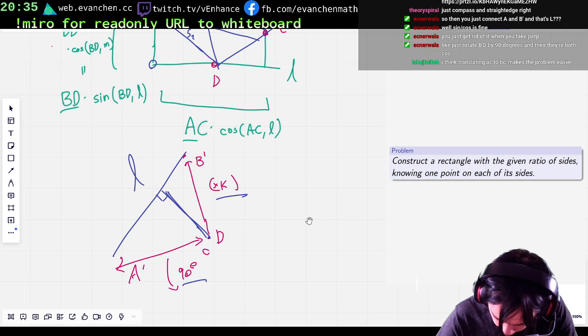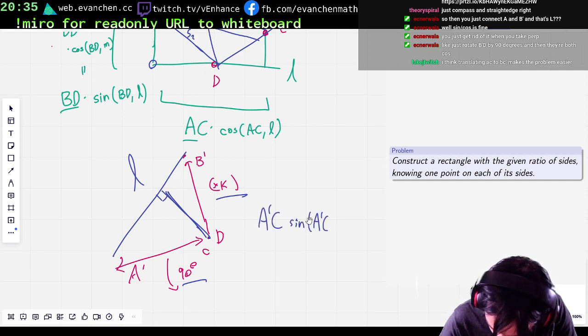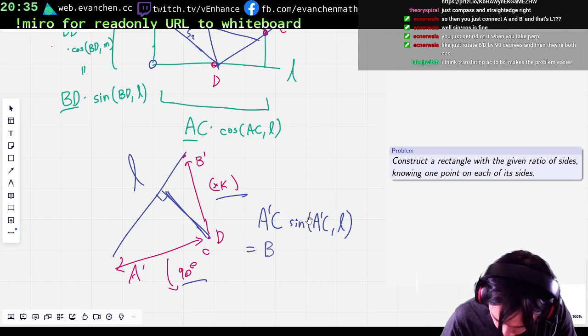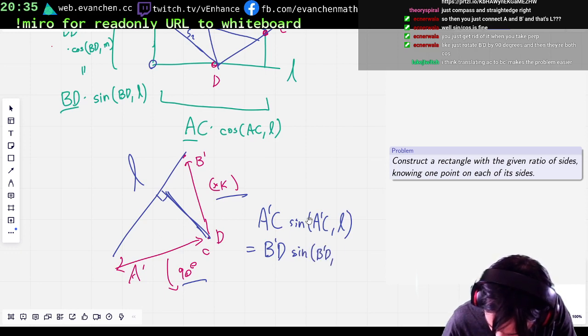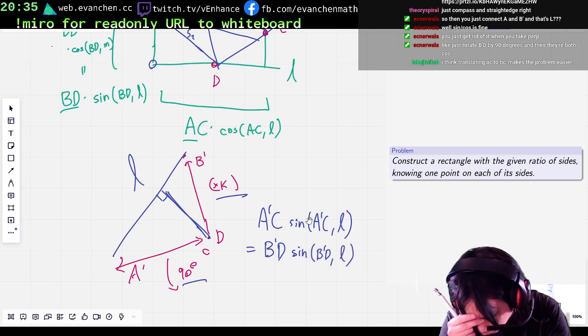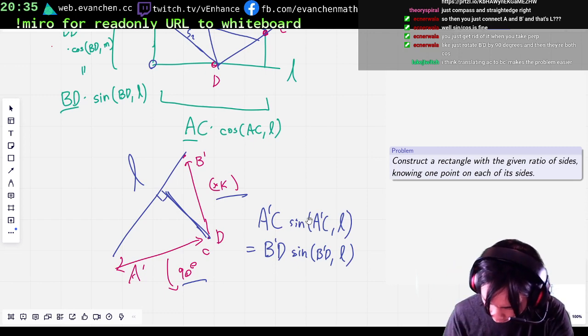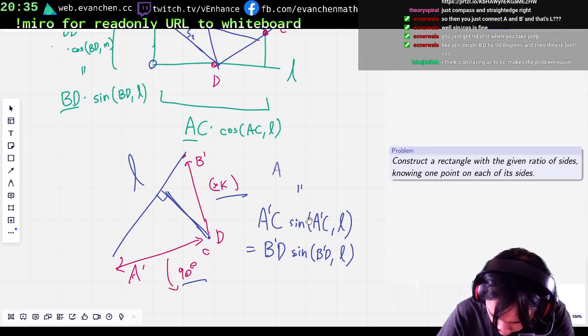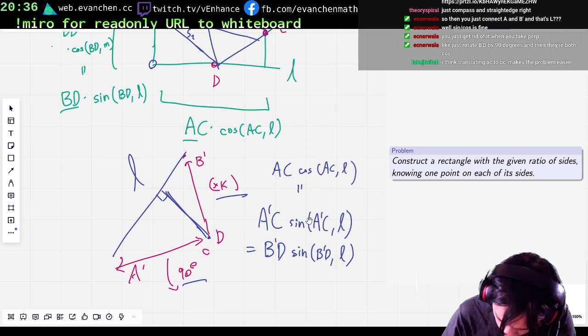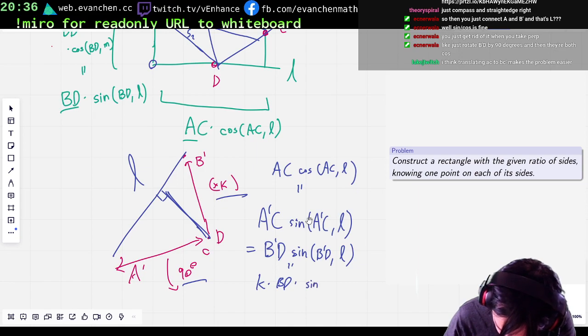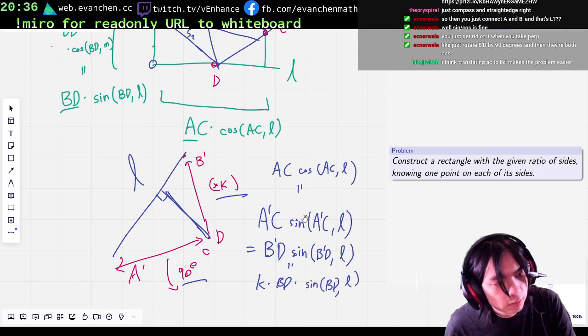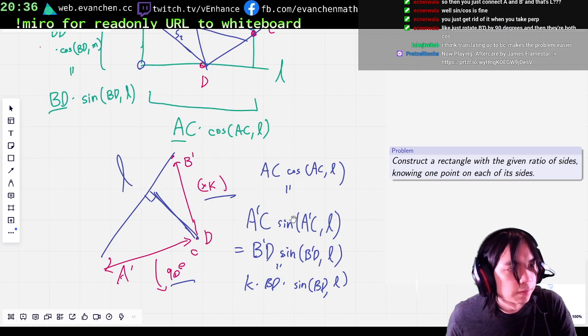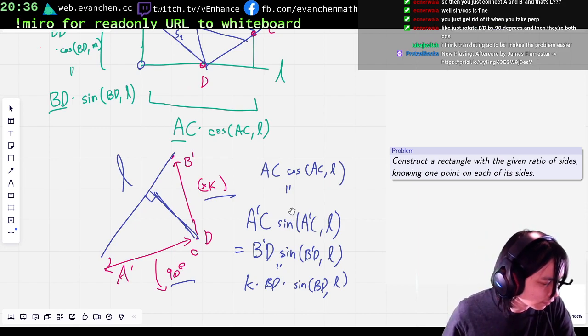So A prime C sine A prime C L is definitely equal to B prime D sine B prime D L. Okay, how should it work? So this becomes A prime C cos A prime C L. So this one is like K times B prime D times sine B prime D L. Okay.